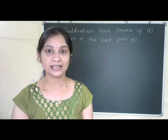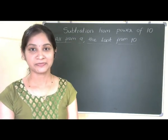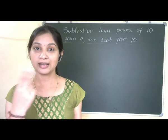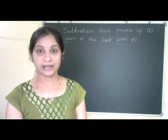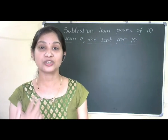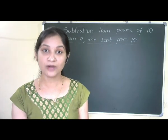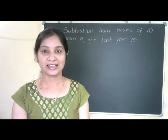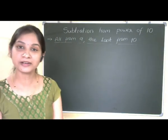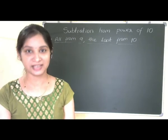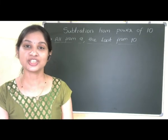Today we are taking one more special case — that is subtraction from a power of 10. That means if you are given two numbers such that you need to subtract one number from a power of 10, like 10 raised to 1, 10 raised to 2 — that means 10, 100, 1000, 10000, and so on. For that we need to follow this rule: all from 9 and the last from 10. Let us learn how we will use this rule to solve such problems.